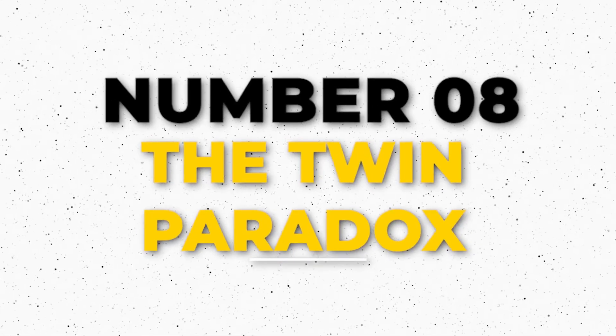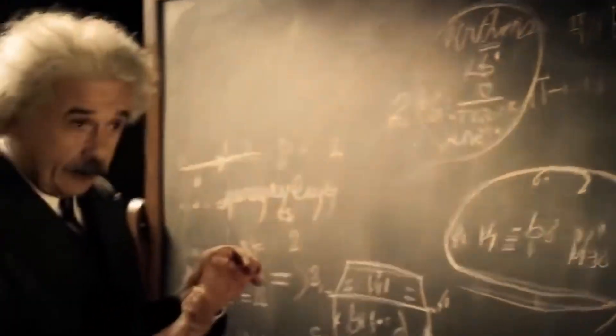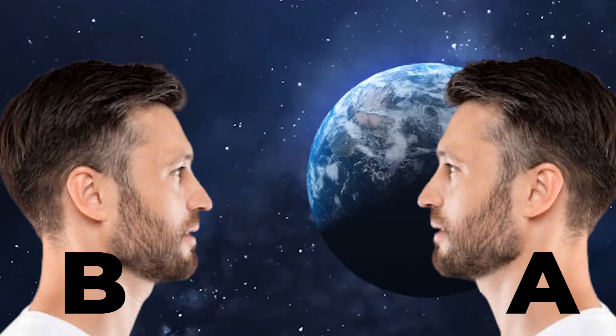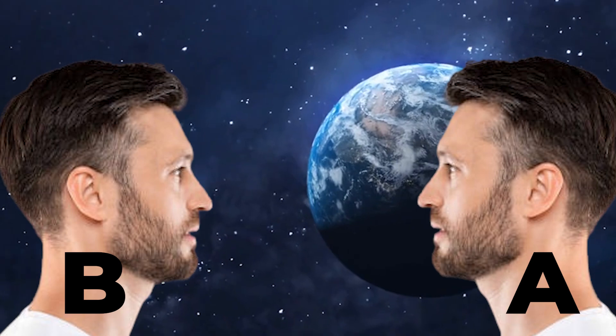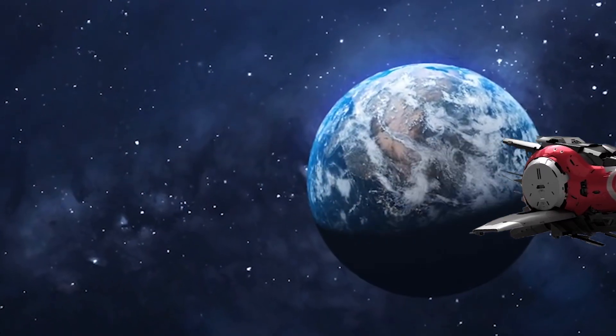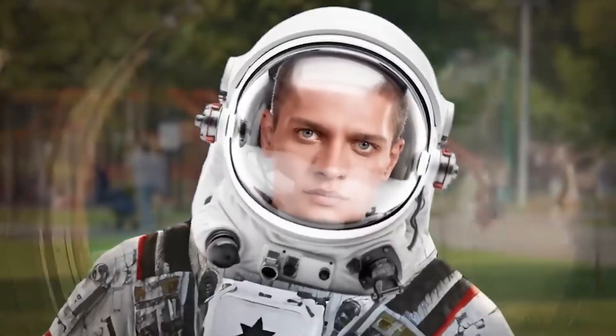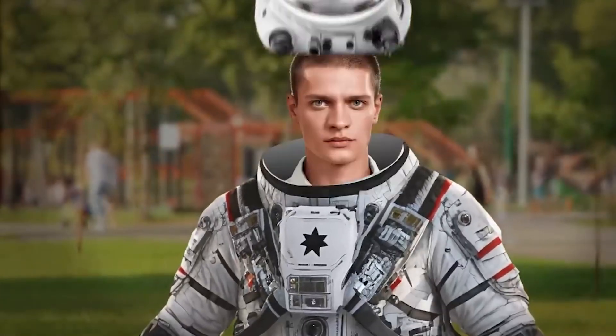Number 8: The Twin Paradox. Let's illustrate Einstein's theory with the famous twin paradox. Imagine two twins. Twin A stays on Earth, while Twin B travels to a distant star in a spaceship, moving at 90% of the speed of light. For Twin B, the journey feels like just a few years. But when they return to Earth,